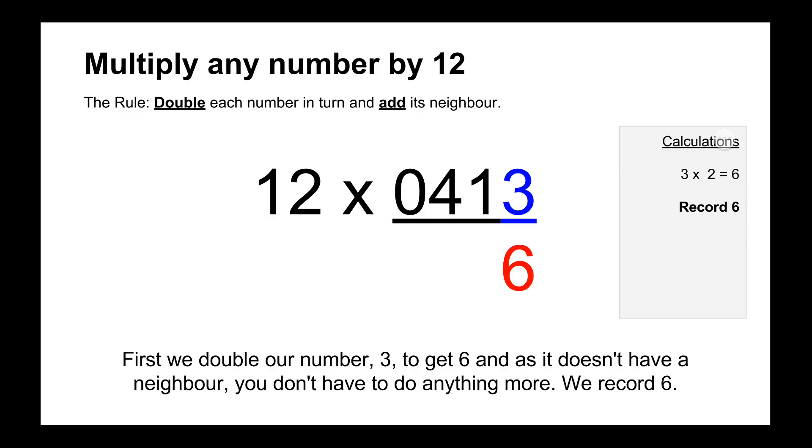So dealing with the first number on the right is number 3. Double that is 6 and then we have to add its neighbour, but as it doesn't have a neighbour on the right hand side we don't add anything. So we just record the 6 below the 3 and that's the first digit in our answer.